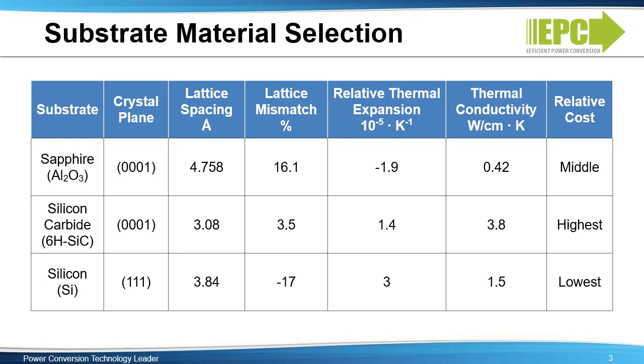For these reasons, silicon carbide is commonly used in applications that require very high power dissipation inside the transistor, such as linear RF power amplifiers.